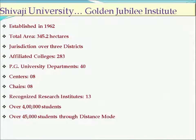We have included a Moodle icon for easy use of Moodle for every faculty member of the university. Shivaji University was established in 1962. Its jurisdiction covers three districts: Kolhapur, Sangli, and Satara. There are 283 affiliated colleges, 40 university departments, 13 recognized research institutes, over 4 lakh students, and more than 50,000 distance education students.